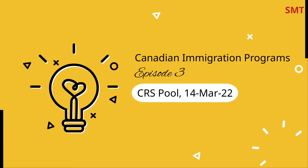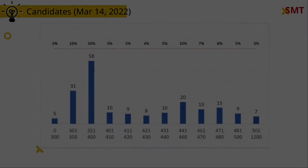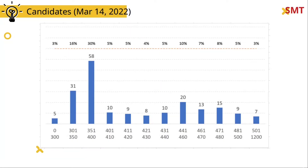The reason I believe this analysis is important is because we need to understand our position as a candidate, we need to understand the competition, and we need to understand our likelihood of being invited in the federal program or in the provincial program. This chart represents the total number of candidates according to their CRS score.